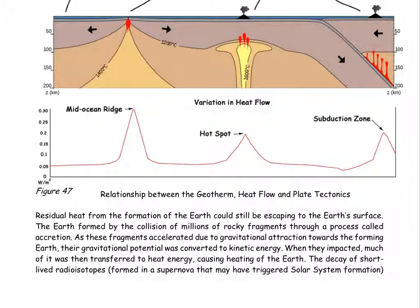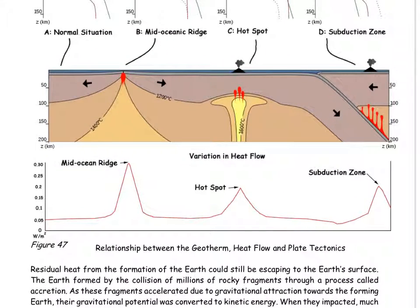These peaks relate to different parts of the Earth's surface. If you look at the diagram above as well, you can see the highest peak, the highest amount of heat flow, which is 0.3 watts per meter squared, occurs at what is known as the mid-oceanic ridge.